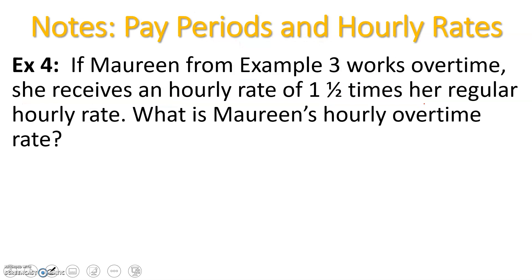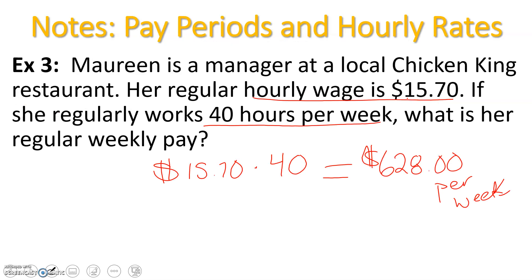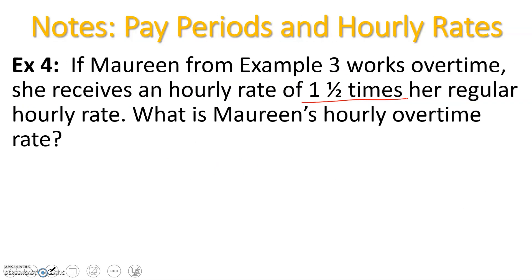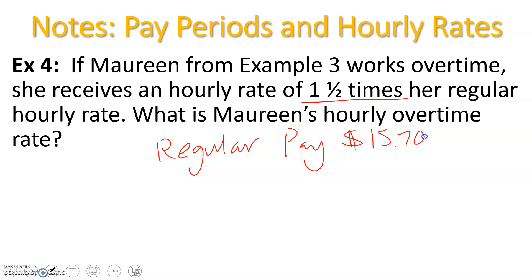Example four: If Maureen from example three works overtime, she gets an hourly rate of one and a half times her regular hourly rate — also known as time and a half. What is Maureen's hourly overtime rate? Looking back at example three, we know Maureen was earning $15.70 an hour as her regular pay.